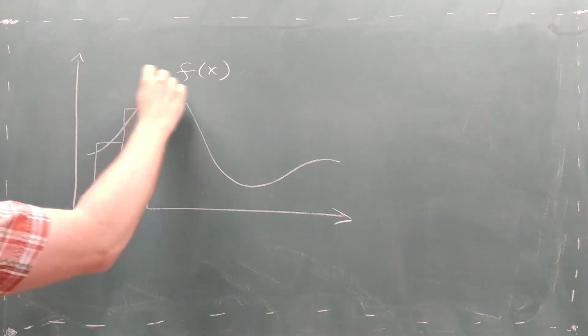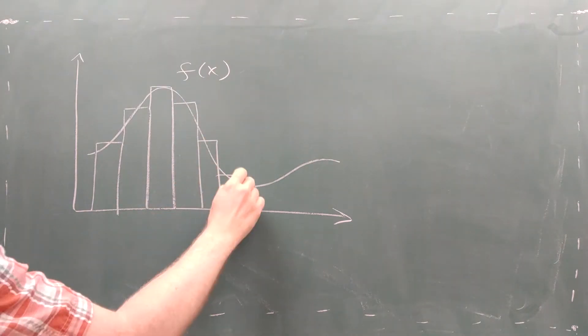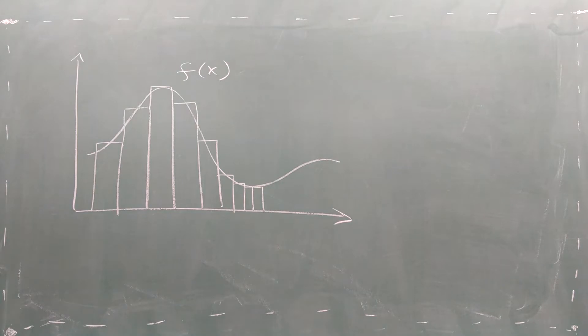When integrating a function using a Riemann sum, you proceed along the function in nice, steady increments. If you want to make the result more accurate, you simply take smaller steps.